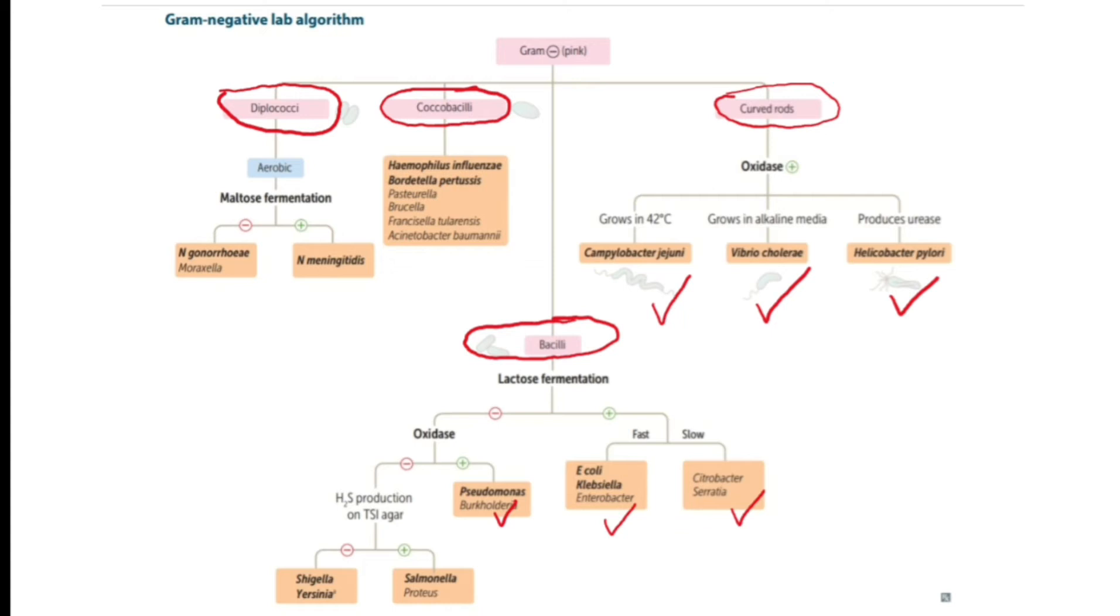There are two groups. The ones which can produce hydrogen sulfide include Salmonella and Proteus. Shigella species, the causative agents for shigellosis, and Yersinia, including Yersinia pestis and other species, cannot produce hydrogen sulfide.